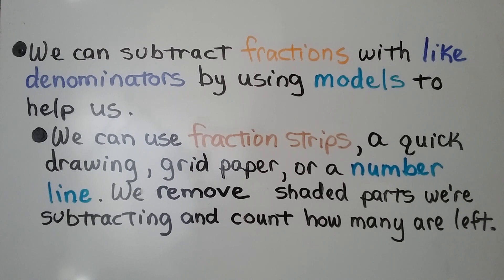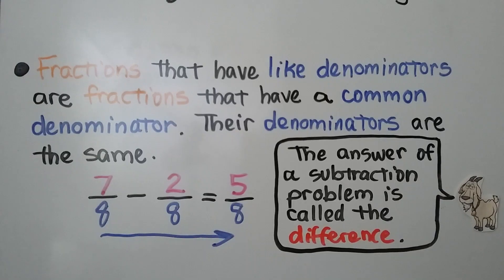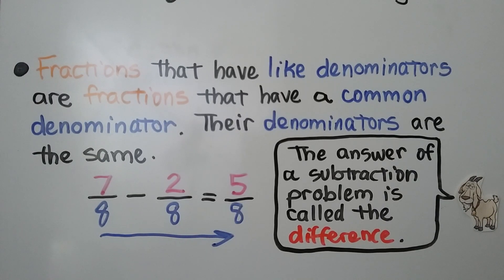We remove shaded parts we're subtracting and count how many are left. Fractions that have like denominators are fractions that have a common denominator — their denominators are the same.